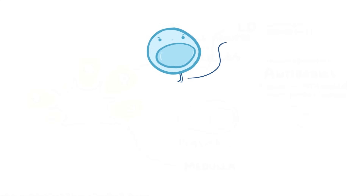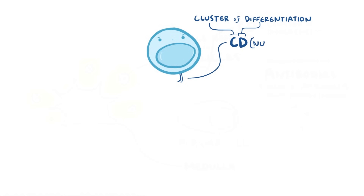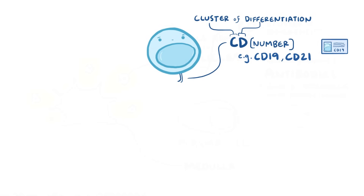Various immune cells, including B cells, have surface proteins or markers called CD, short for cluster of differentiation, along with a number like CD19 or CD21. The combination of surface proteins on an immune cell works a bit like an ID card.